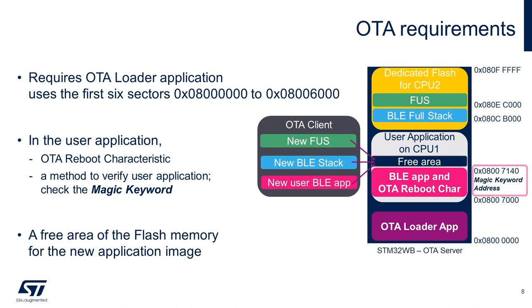The OTA loader will use this address and read the magic keyword to verify whether a valid user application is downloaded. Lastly, a free area of the flash memory is needed. This area acts as temporary storage when a new firmware image is transferred from the client. I'll explain more about these in the next couple of slides.